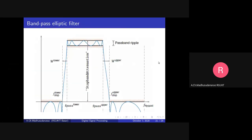Now let's look into the band pass filter. This is a band pass filter. This is an elliptic filter design — it will have ripples in both the passband and the stopband. The advantage with the elliptic filter is that you can have a very narrow transition band. You can see this transition band is very narrow. This is the passband up to this region.